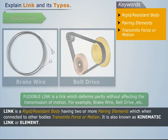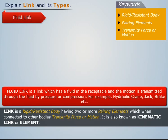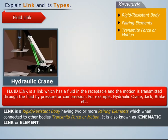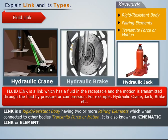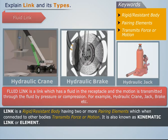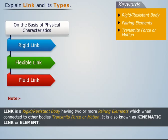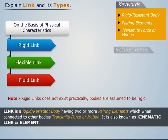A flexible link is a link which deforms partly without affecting the transmission of motion — for example, brake wire, belts, drive chain, etc. A fluid link is a link which has a fluid in a receptacle and motion is transmitted through the fluid by pressure or compression — for example, hydraulic crane, jack, brake, etc. Note that rigid links do not exist practically; bodies are only assumed to be rigid.